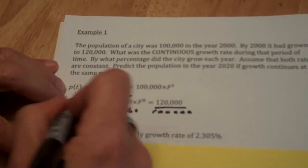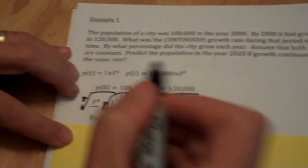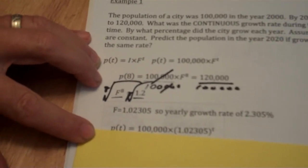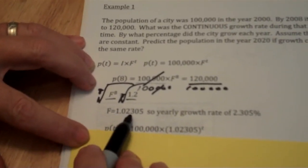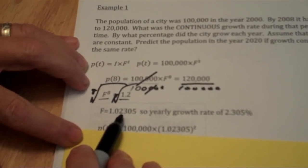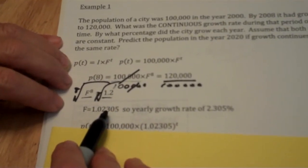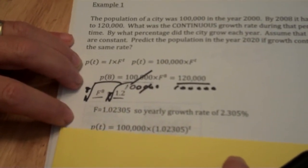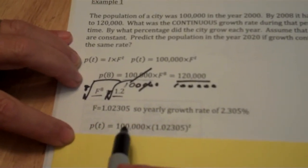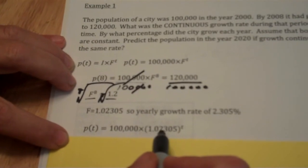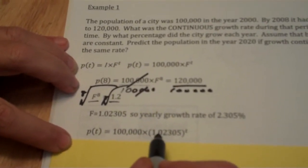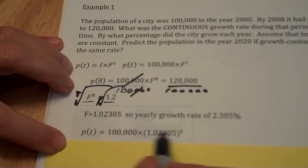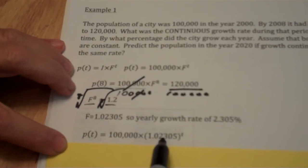To solve for this, I'll take the 8th root of both sides of my equation. The 8th root is 1.02305, so the yearly growth rate in percent form is actually 2.305%. Let's talk about the continuous growth occurring during this period. The population starts with that same initial value, and my growth rate is 1.02305 to the t power.